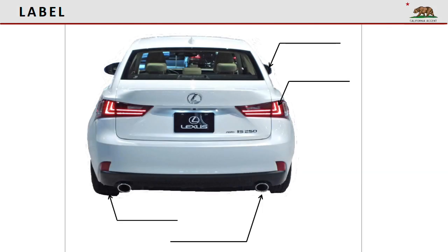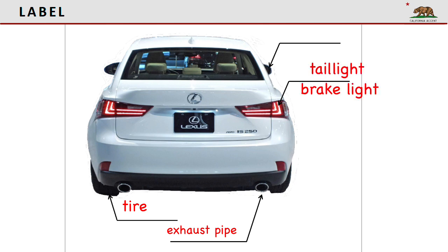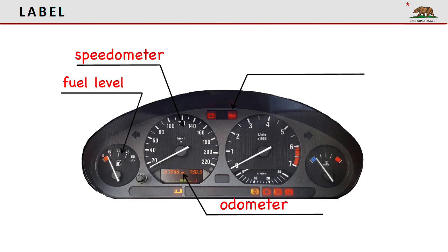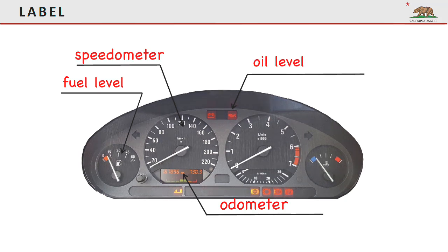Now let's do the label section. Write the word next to the picture. Tire. Exhaust pipe. Tail light. Mirror. Fuel level. Speedometer. Odometer. Oil level.